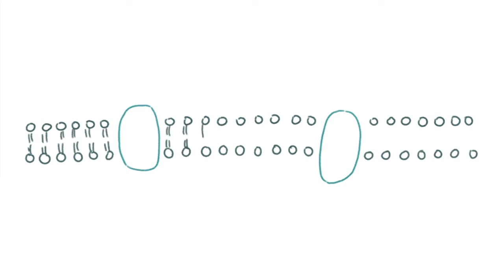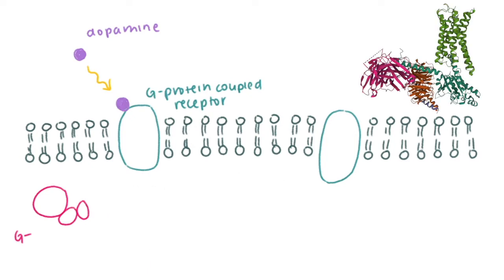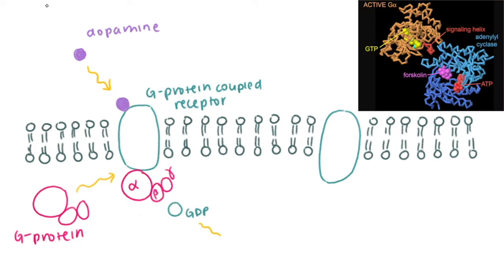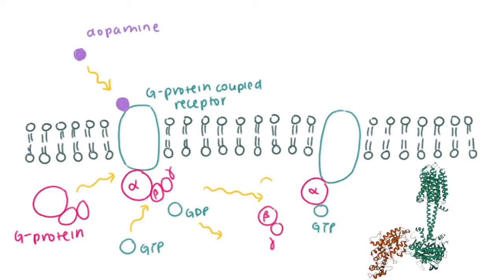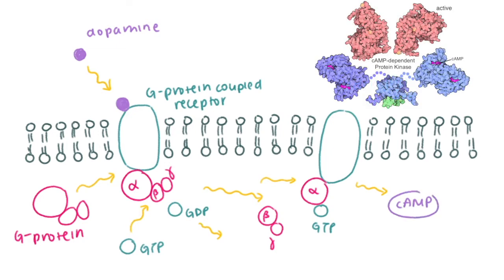Dopamine binds to dopamine receptors, which are G-protein-coupled receptors located in the postsynaptic membrane. This changes the structure of the receptor, which can then activate a nearby G-protein by exchanging the bounded GDP molecule for a GTP molecule. Once activated, the G-protein splits with its alpha subunit and the bound GTP moving to bind to adenyl cyclase. The adenyl cyclase is then activated, producing cyclic AMP and spreading the signal throughout the cell.